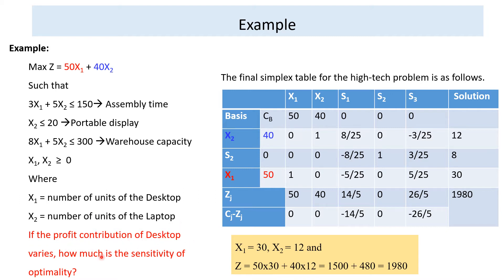The profit contribution of desktop is 50 per unit, and from a single laptop we can get 40. If the profit contribution of desktop changes, how sensitive is the optimality? Before conducting post-optimality analysis, we have to find the optimal solution of this maximization problem using the simplex method, which we discussed in previous lessons.